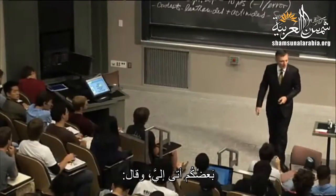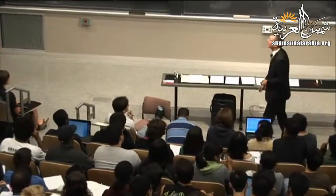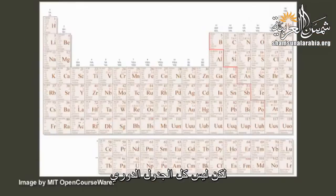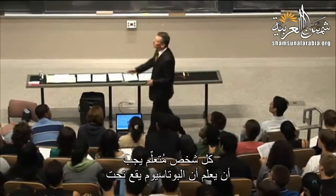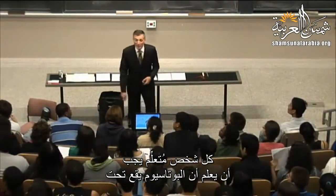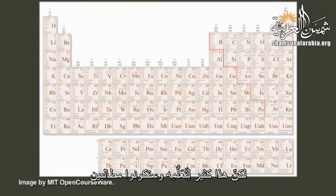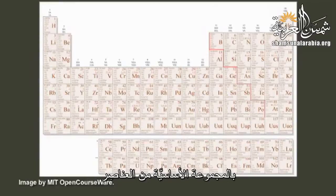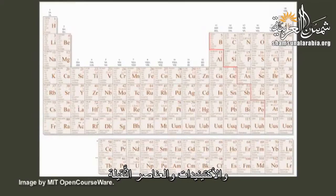Some of you approached me and asked if it's true that you have to memorize the periodic table. Yes — but not the whole periodic table. Every educated person should know that potassium lies under sodium, which lies under lithium. And you are going to be educated, whether you like it or not. We're just going to look at the main block — we're not going to ask you to memorize the lanthanides, actinides, and the superheavies.